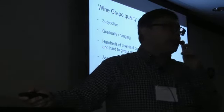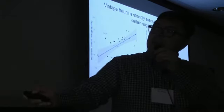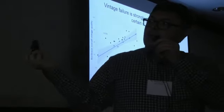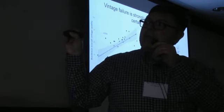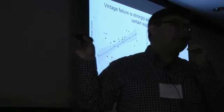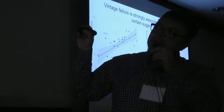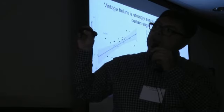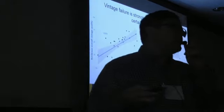Nobody likes sour grapes—they're very difficult to market. Vintage failure is strongly associated with not reaching sufficient sugar levels. These values are from Bordeaux, from the vintage quality index the co-op publishes. The x-axis is Cabernet or Merlot mean sugar in grams per liter—multiply by 0.1 to get Brix. As mean sugar concentration increases, Bordeaux overall vintage quality increases. Likewise, as growing season mean temperature increases, Cabernet and Merlot mean sugar levels increase.